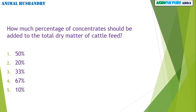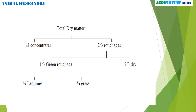How much percentage of concentrates should be added to the total dry matter of cattle feed — 50%, 20%, 33%, 67%, or 10%? The classification: in total dry matter, 1/3 must be concentrates and 2/3 must be roughage. Of roughage, 1/3 must be green roughage and 2/3 must be dry. Of the 1/3 green roughage, 1/4 must be legumes and 3/4 is grass.